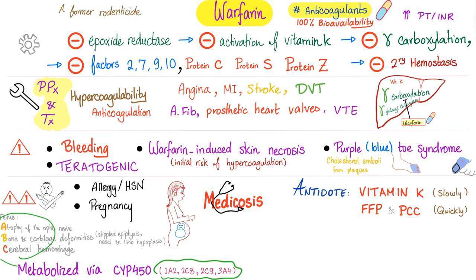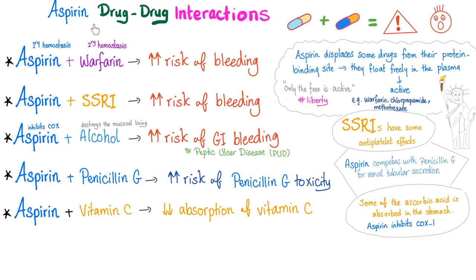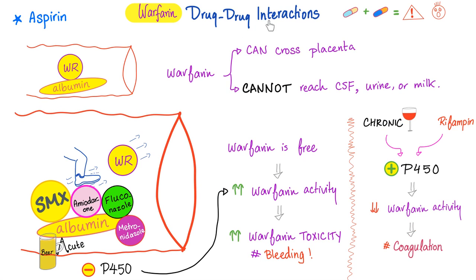The antidote is FFP and PCC. Warfarin is used for MI, stroke, DVT, AFib, metallic valves, and VTE. Aspirin and warfarin must never be combined — aspirin destroys primary hemostasis while warfarin annihilates secondary hemostasis, creating a massive risk of bleeding.